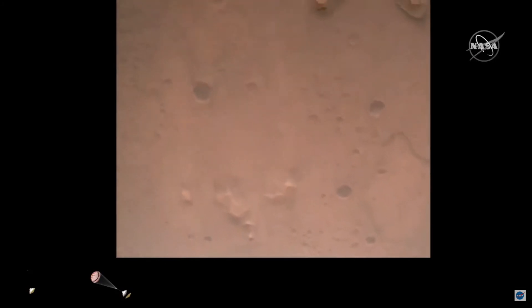Nav filter converged. Velocity solution, 3.3 meters per second. Altitude, 7.4 kilometers. Now has radar lock on the ground. Current velocity is about 100 meters per second, 6.6 kilometers above the surface of Mars.